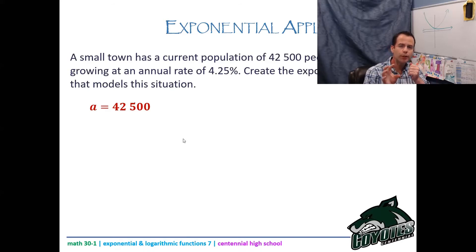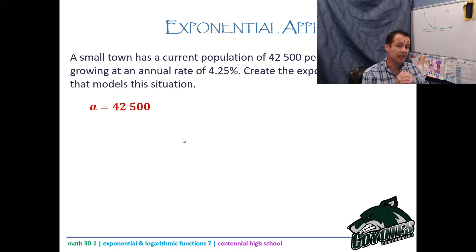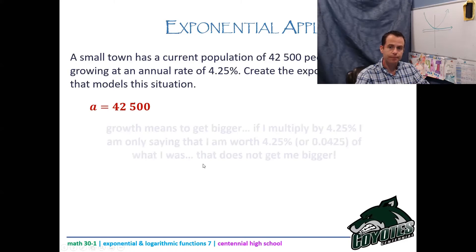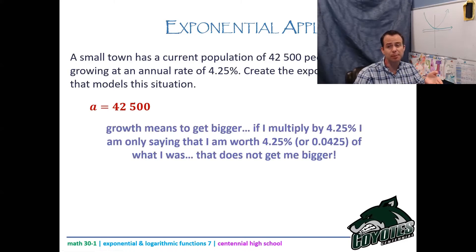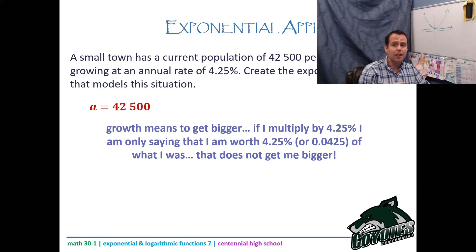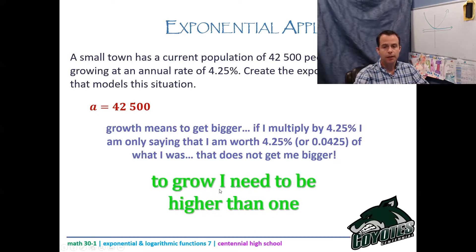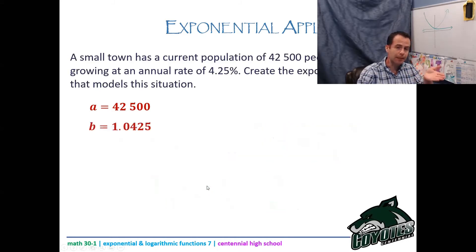So a 4.25% growth means a change of 104.25%, which as a decimal is 1.0425. If you just multiplied by 4.25, you'd actually be making the value much smaller — that's really 0.0425, which shrinks it. To grow, you need to be above 1, so the b value must be 1.0425.